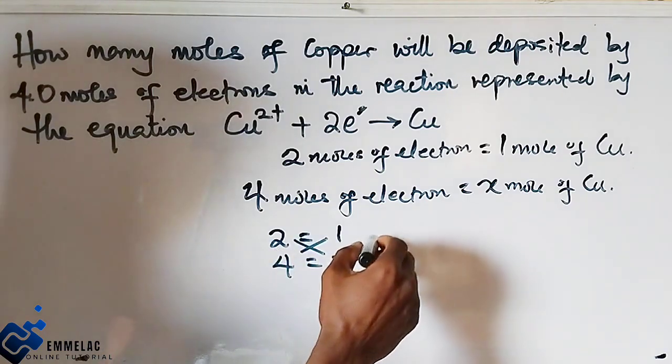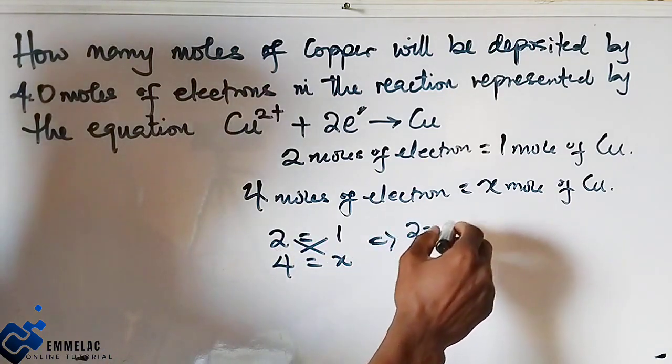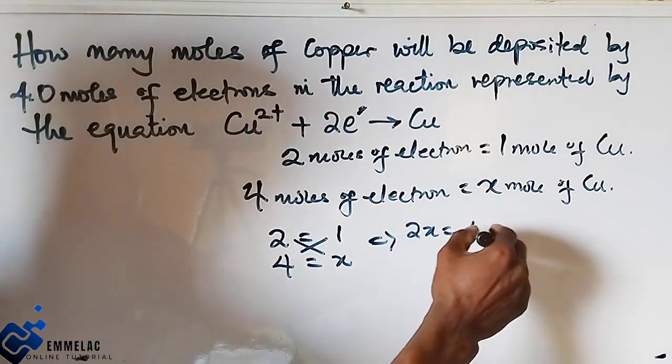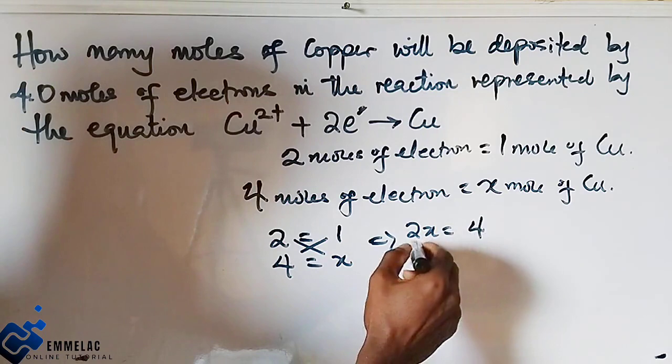So cross multiply. This will give two X equals four times one is four. Dividing both sides by two.